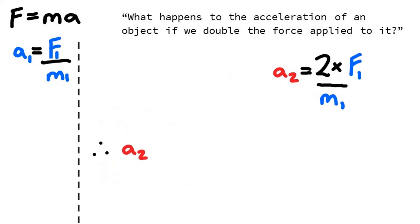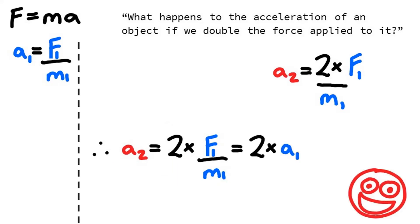Excellent. If we tidy it up a bit, we can spot very quickly that the expression for a1 is in our new expression. So a2 is equal to 2 times a1. No surprises there. But wait, there's more!